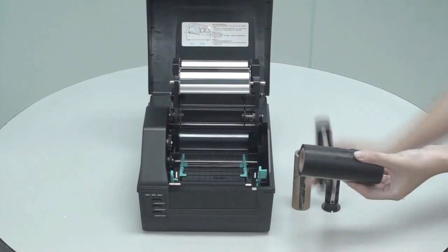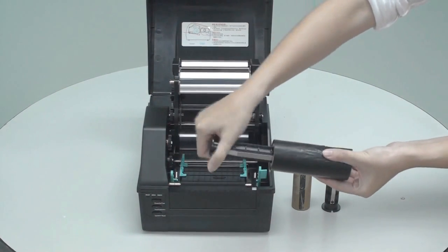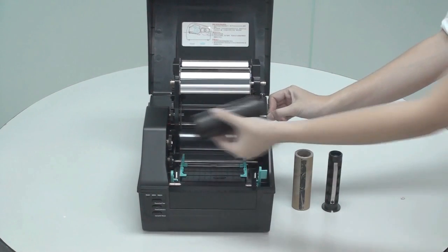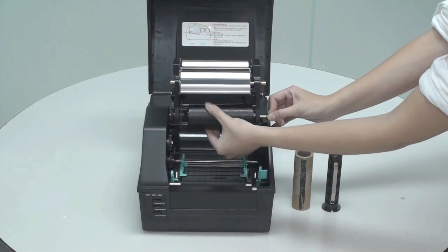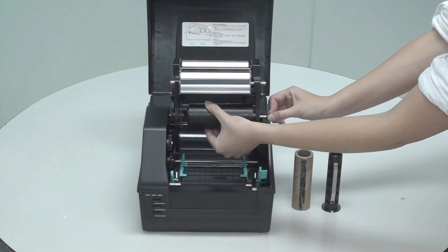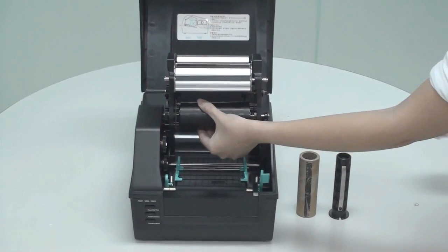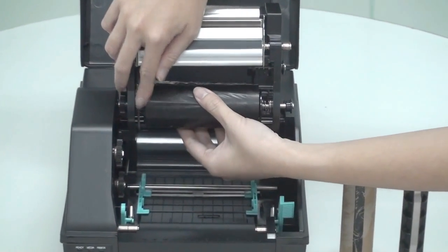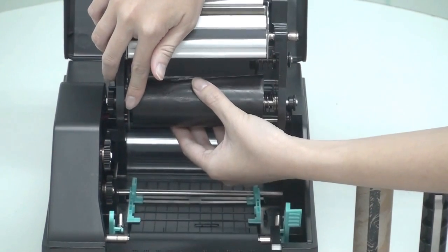Insert one of the ribbon spindles onto the ribbon roll. You'll want to insert the spindle from the end without grooves. Next, pull out the ribbon release knob and load the ribbon by placing the grooved end of the ribbon spindle onto the left mount. Ensure the ribbon spindle is correctly positioned, adjusting the left ribbon mount backwards as needed.